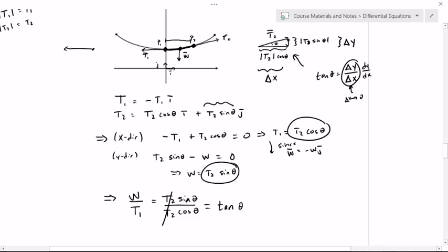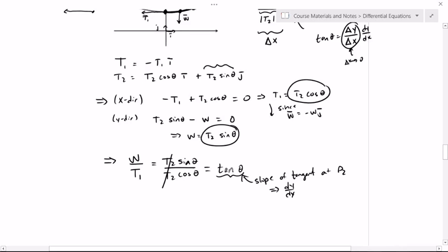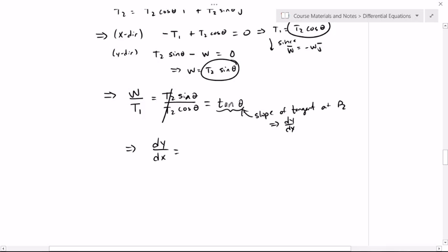This tangent of theta is the slope of the tangent at P2, which means it's dy dx. So what I can actually say now is I have a differential equation dy dx is equal to the weight of that segment divided by the tension at that point P1. So weight on segment, and this is the tension at midpoint. So if I had formulas or values for those two numbers, then this would mean my differential equation.